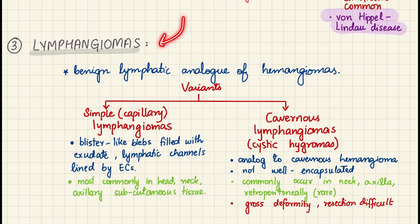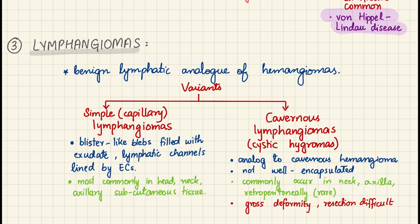Lymphangiomas are benign lymphatic analogs of hemangiomas. The simple type resembles blister-like blebs filled with exudate, most commonly in the head, neck, and axillary area. The cavernous lymphangiomas, also known as cystic hygromas, are not well-encapsulated and commonly occur in the neck, axilla, and retroperitoneally. They cause gross deformity and resection is very difficult.